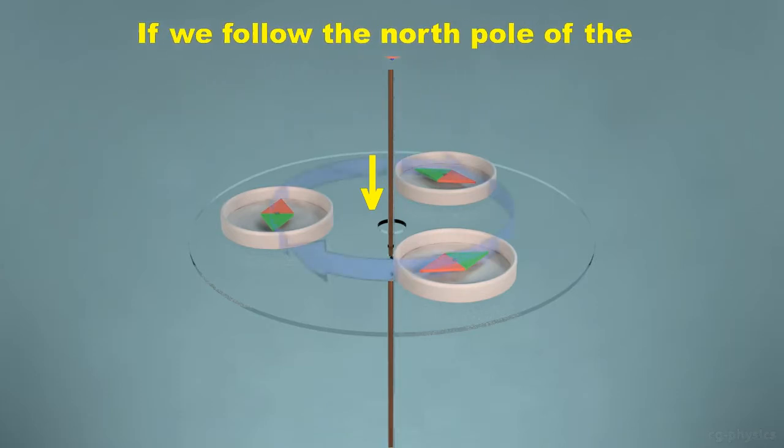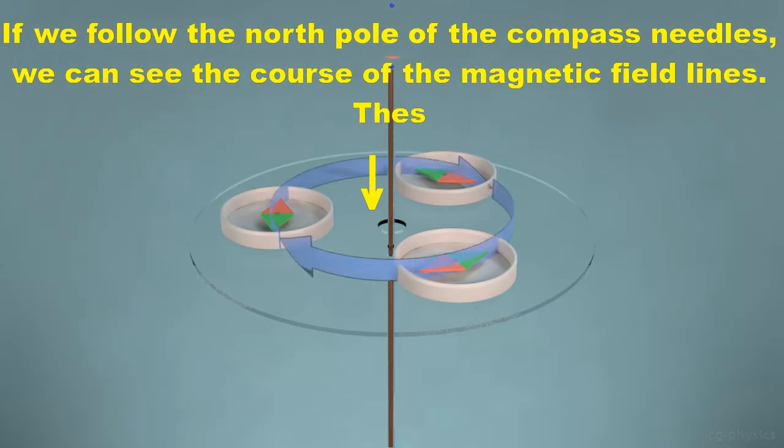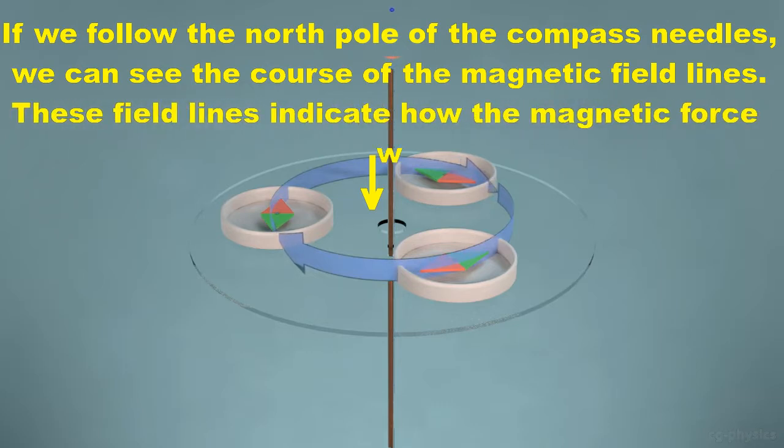If we follow the north pole of the compass needles, we can see the course of the magnetic field lines. These field lines indicate how the magnetic force works.